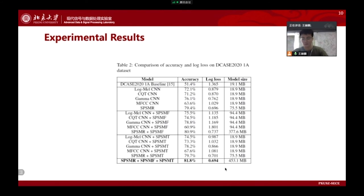Table 2 demonstrates the experimental results of different methods on the DCASE 2020 Task 1A development set. Among them, SPSMR plus SPSMF plus SPSMT achieves the highest accuracy and the lowest log loss, which shows that our proposed methods can adversely improve the performance for ASC.